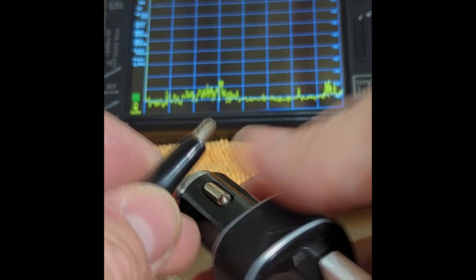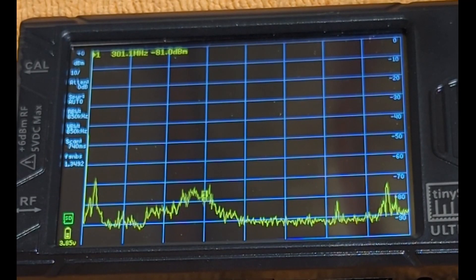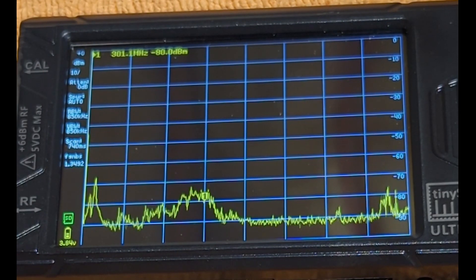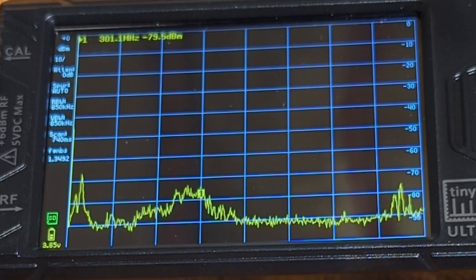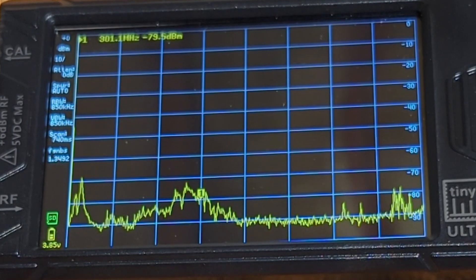So we apply power and what do we get? We get a peak around 27 MHz, around negative 65 dB and a raised noise floor around 250-300 MHz. Overall not terrible.